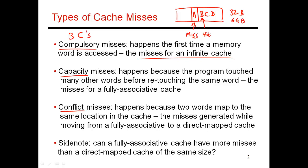One way to reduce compulsory misses is to increase block size. If I go from a 32-byte block to a 64-byte block, I'm effectively doing a prefetch for more data elements, which should lead to fewer misses for those elements. In addition to using a larger block size, I can also use a sophisticated prefetch mechanism that predicts what will be accessed next and tries to bring that in before the CPU issues the request.